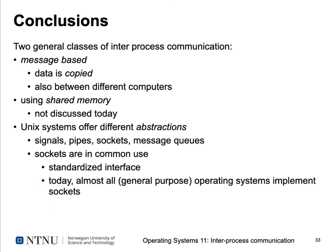This lecture covered inter-process communication. We've seen two general classes: message-based IPC, where data is always copied and can therefore work between different computers, and shared memory IPC. Unix systems offer several abstractions including signals, pipes, sockets, and message queues. Sockets are very commonly used because they're a standardized and universal interface — almost all general-purpose operating systems implement them, so socket-based communication works across Unix and Windows systems. That's all for today, thanks for listening.